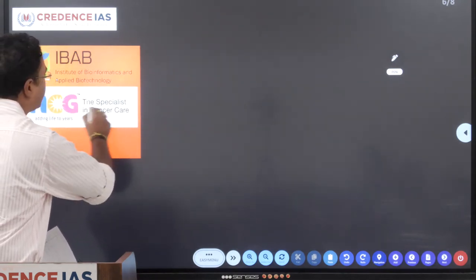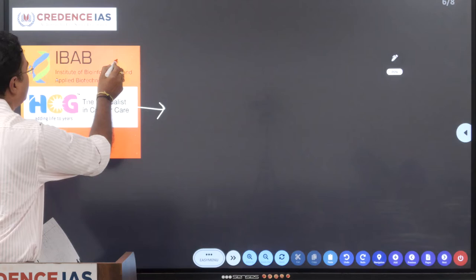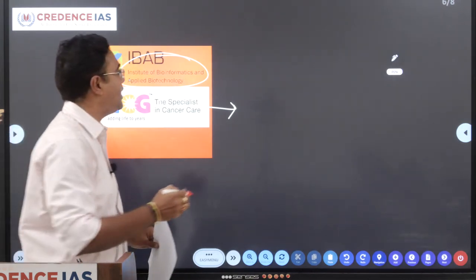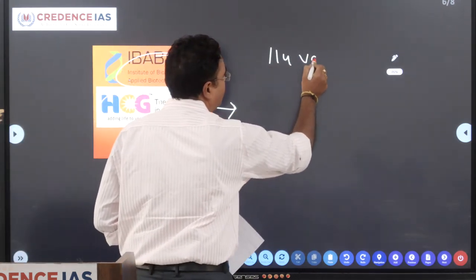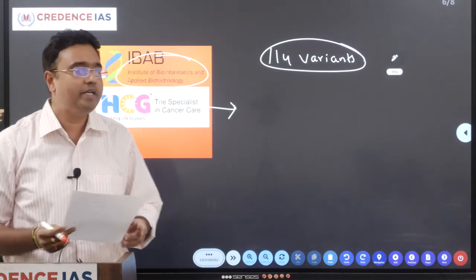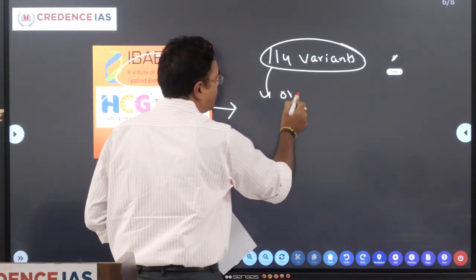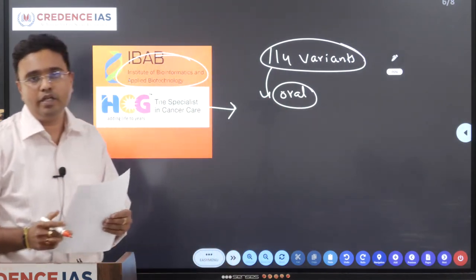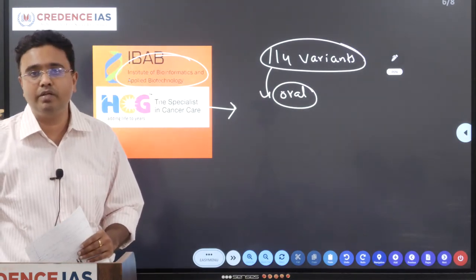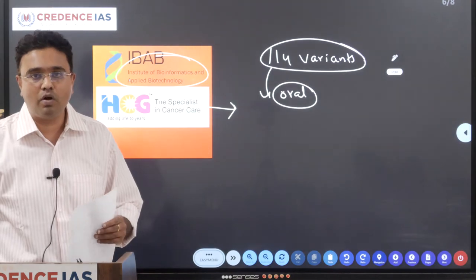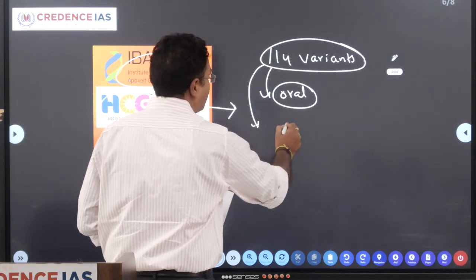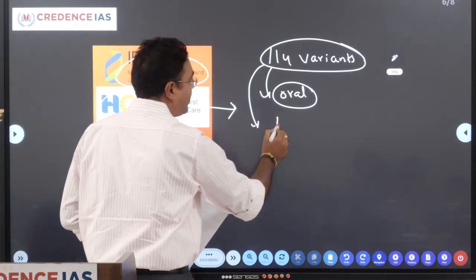Moving on to the next aspect, the HCG, the Cancer Specialist Hospital, in association with Institute of Bioinformatics and Applied Biotechnology has carried out intense research with regard to cancer and they came out with a new finding called 114 variants, which are responsible for causing cancers in the human body. Majorly they carried out research for oral cancer, which is considered the most prevalent form of cancer in the Indians. So this research has got appreciation from even westerns, especially Royal School of London Medicine. According to this, there are 114 variants which cause oral cancer.